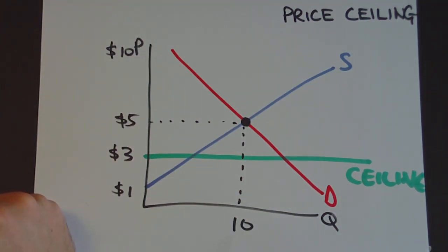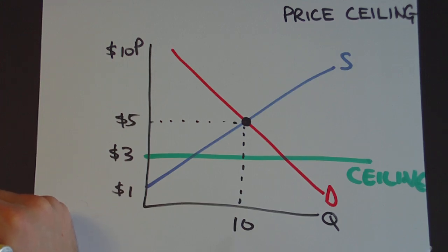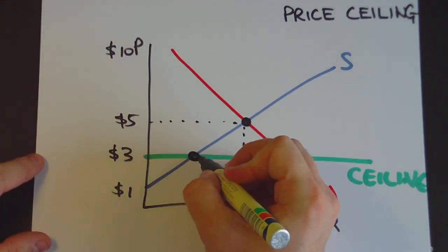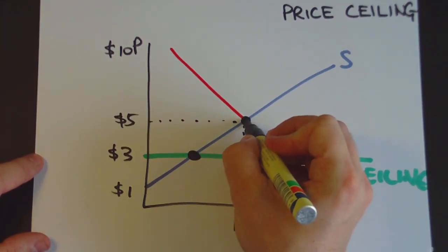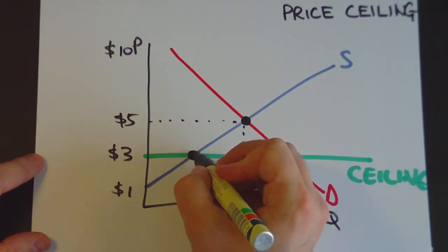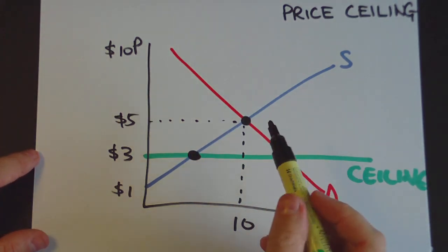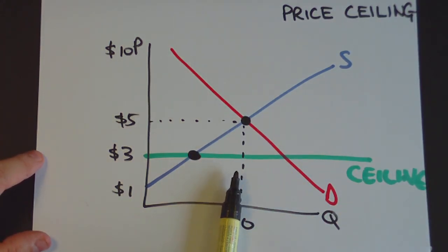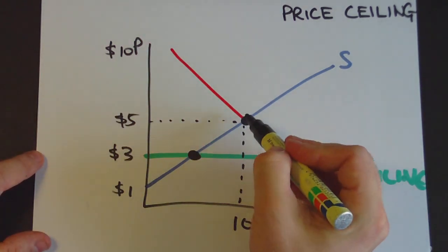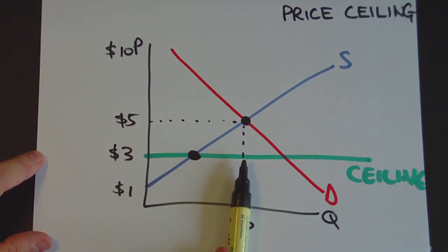Now the first step is to work out where the market will actually operate. It's going to move from this point under equilibrium to this point here under the ceiling. Why is that the case? Well, the price ceiling prevents the price from moving towards equilibrium. Naturally the market would operate here, but the price ceiling prevents it from getting above there and it stops here.